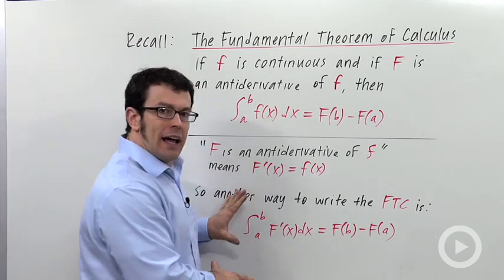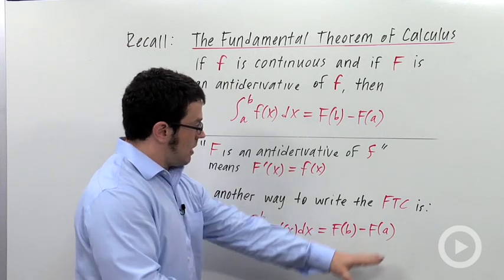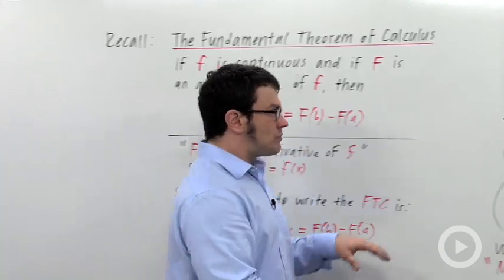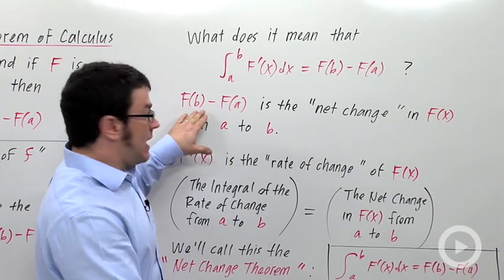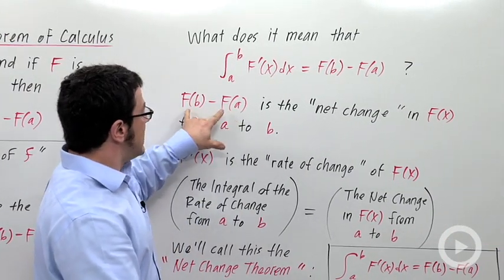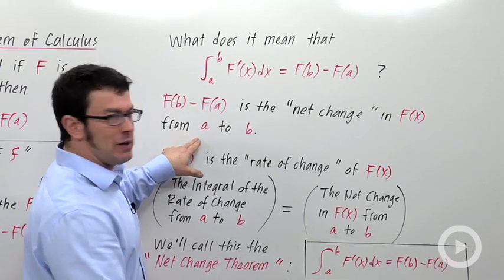So I want to analyze what this means, what this new equation, this new theorem means. So what does it mean? Well, first of all, the right-hand side, F of b minus F of a is the net change in the value of F of x from a to b.